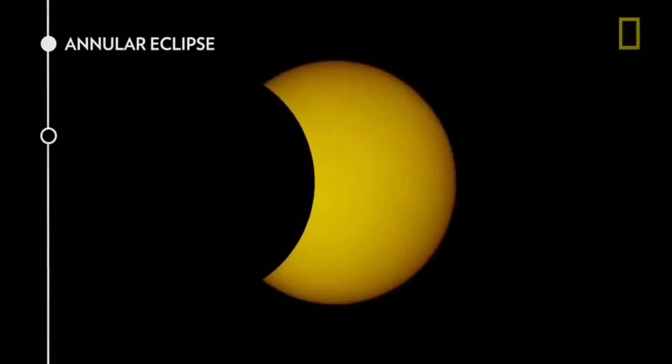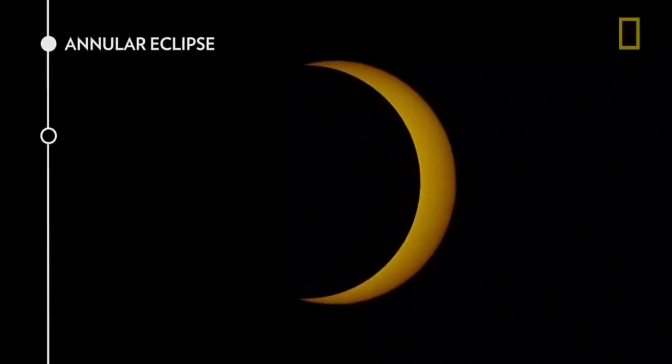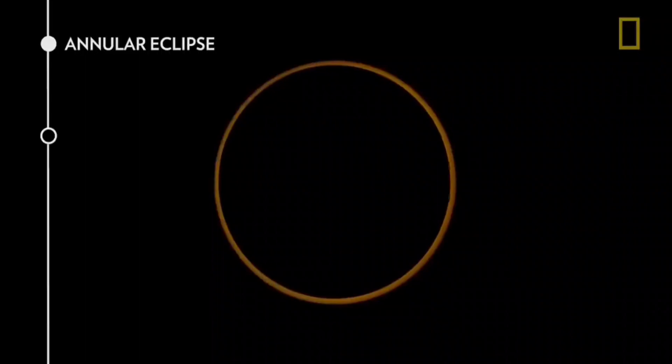This takes place when the moon's disk is not big enough to cover the entire disk of the sun and the sun's outer edge remains visible to form a ring of fire around the moon.